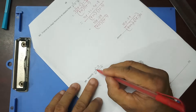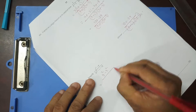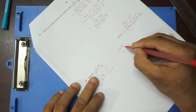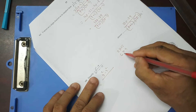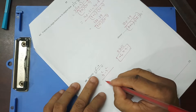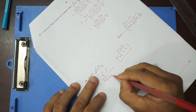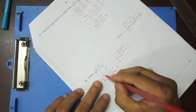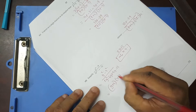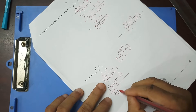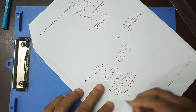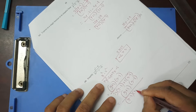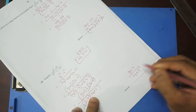Now simplify this expression. The numerator is y squared minus 9, which is a difference of squares. For the denominator, use middle term factorisation: 2 times 15 gives 30, split as minus 6 and plus 5. So the denominator becomes 2y squared minus 6y plus 5y minus 15, factorising to (2y+5)(y−3). The numerator factors as (y+3)(y−3). Cancelling (y−3), the final answer is (y+3) over (2y+5).